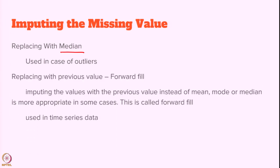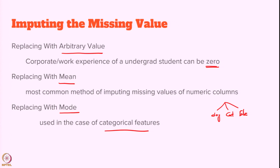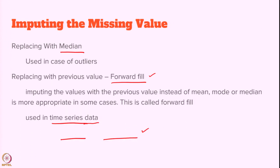These four cases cannot be used for time series data. For example, temperature change over a 24-hour duration — from midnight to next day midnight. In such cases you cannot fill with mean, median, mode, or arbitrary values. Instead, we use the previous data or the next data. If you take the previous value and fill forward, it is called forward fill. If you take the next value and fill backward, it is called backward fill. For time series data, generally we use forward fill or backward fill.